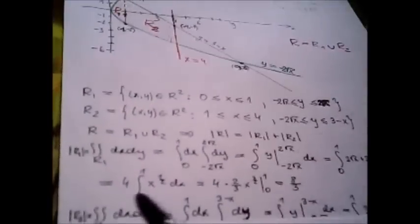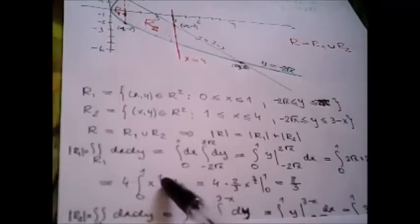Now I calculate separately the area of region R1. The area of region R1 is the double integral over region R1, which equals the integral from 0 to 1 dx of the integral from minus 2 square root of x to 2 square root of x dy. The integral of dy is y. After substituting the limits and simplifying, we obtain the integral from 0 to 1 of 4 times x to the power 1 over 2 dx, and finally we obtain 8 over 3.